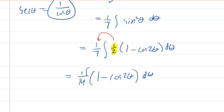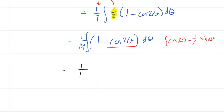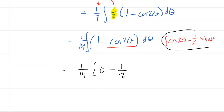Now we are ready to integrate. Recall that the integral of cosine of k theta, where k is a constant, is (1/k) times the sine of k theta. So we integrate: the integral of 1 with respect to theta is just theta, and based on our integration rule, the integral of cosine 2 theta gives (1/2) sine of 2 theta. Combined with the one-fourteenth out front, we have one-fourteenth times (theta minus (1/2) sin(2 theta)) plus C.